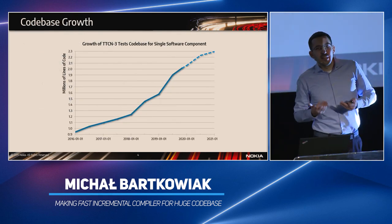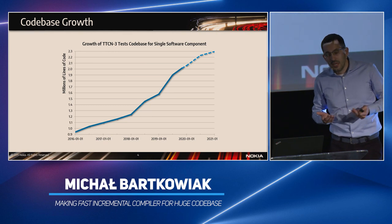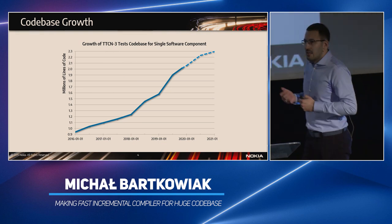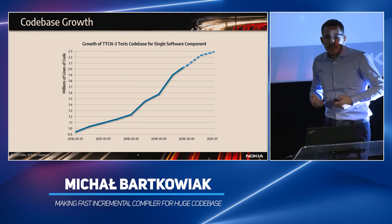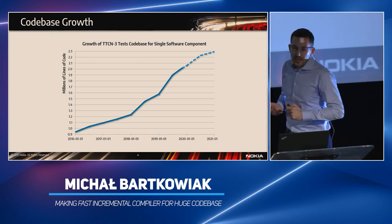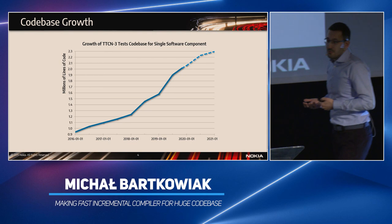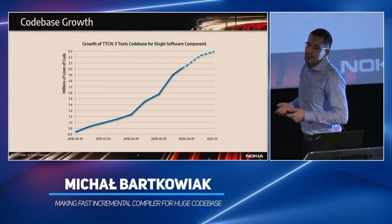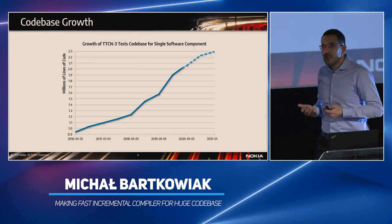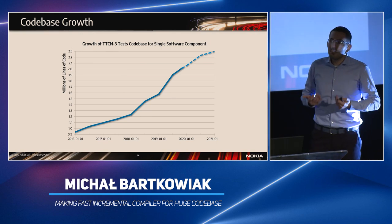Have you ever wondered how many lines of code the tests of a single software component can have, and how fast this number can grow? When we started thinking about writing a new compiler in 2016, this number was around one million lines of code. And today, this number just went over two millions. The growth of the code base is very fast, and we also expect this trend to continue. Consequently, the compilation time of the code base grew five times to well over two minutes and became a bottleneck in the daily work during development of tests.